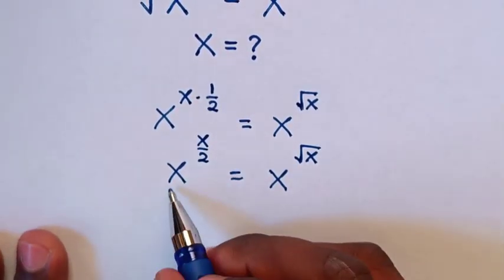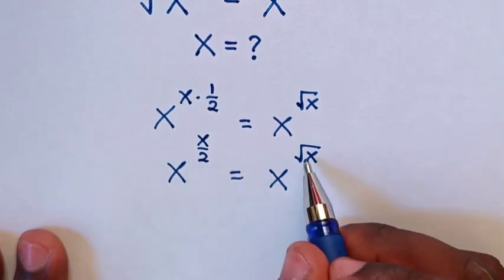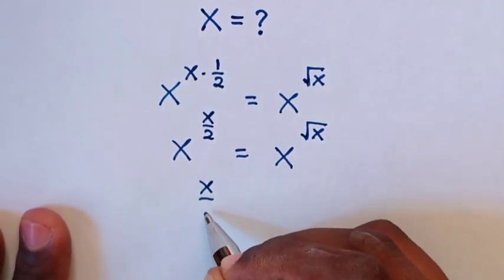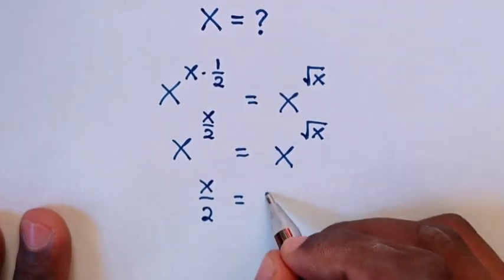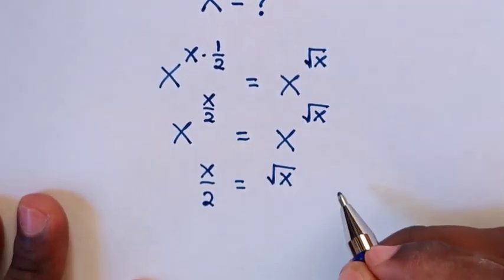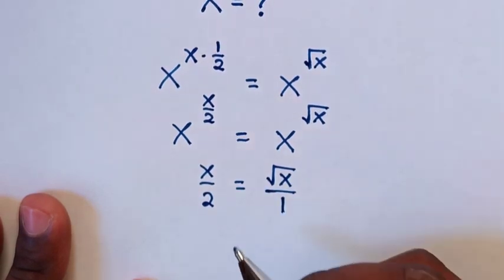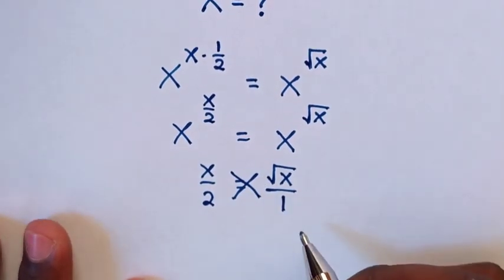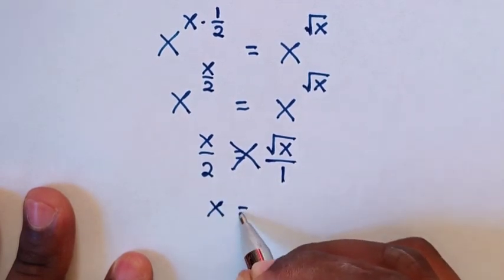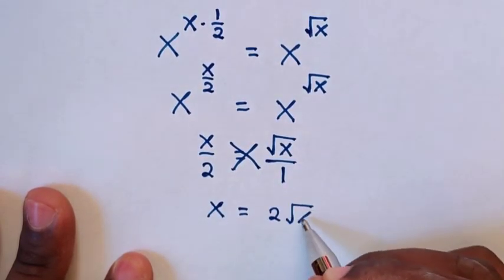Then in here we have the same base but different powers, so we will compare the powers. From that, the power is x over 2 is equal to square root of x. This is the same as x over 2 over 1, so we cross multiply, giving us x is equal to 2 square root of x.